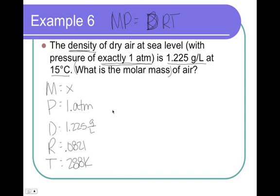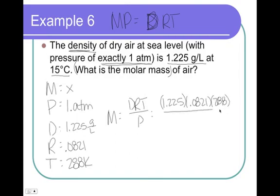Rearrange this guy for big M. It's DRT over P. So, we got D is 1.225, R is 0.0821, T is 288, divided by pressure, which is 1. Molar mass works out to be 29.0 grams per mole.